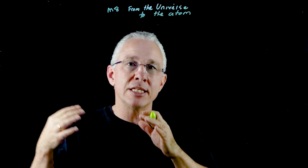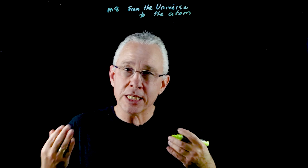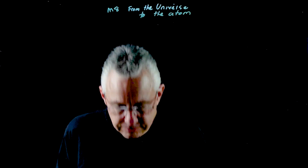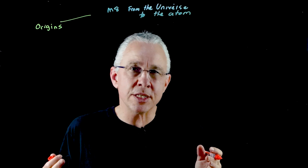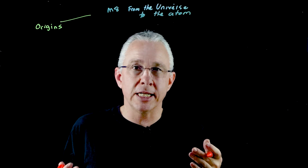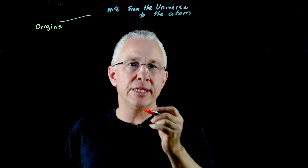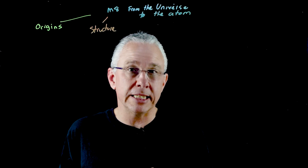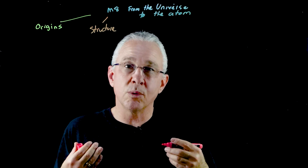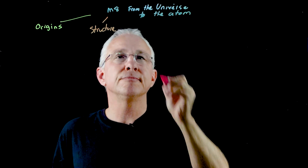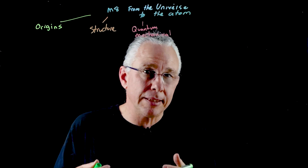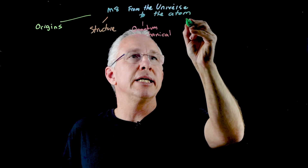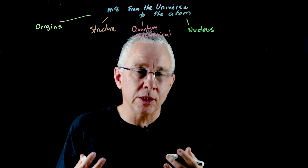As we look at the inquiry questions, we see how our understanding of science develops as we build models based on evidence. The first asks what evidence there is for the origin of the elements. The second asks how it is known that the atom is made up of protons, neutrons, and electrons — essentially atomic structure. The third addresses why classical physics cannot explain atomic structure, so we're dealing with the quantum mechanical model. The fourth digs deeper and asks how the energy of the nucleus can be harnessed.